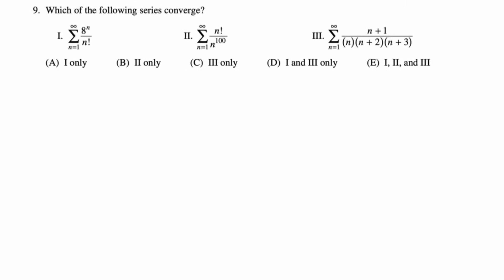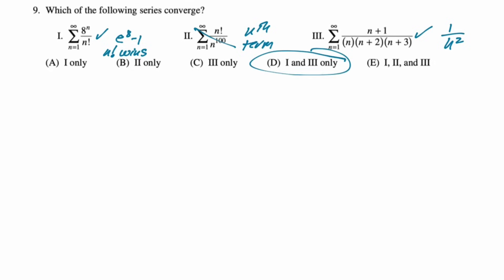Which of the following converges? Series 1 is basically e^x with 8 plugged in — n factorial kills 8^n as n goes to infinity, so it converges. Series 2 is the opposite: the nth-term test says it diverges because n factorial blows up. Series 3 is basically 1/n², a p-series that converges. So series 1 and 3 converge — answer is D.